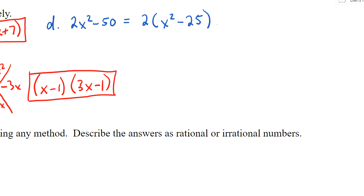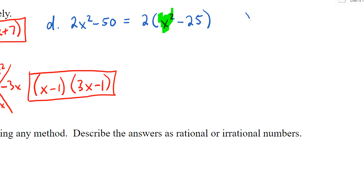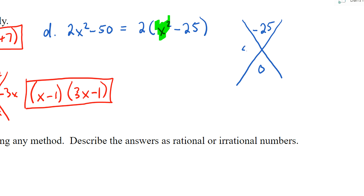We can go to our diamond problem because the coefficient here is just x squared, so we can skip the area model. Negative 25 on top, and the middle x term is zero — there's no x term — so what two numbers multiply to negative 25 and add to zero? Five and negative five. When you don't have a middle term, you'll always get conjugates. Final answer: 2(x plus 5)(x minus 5).